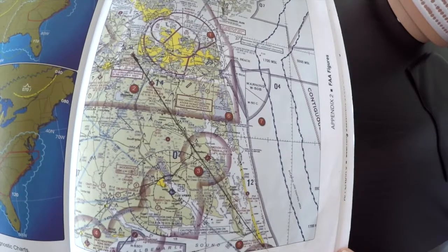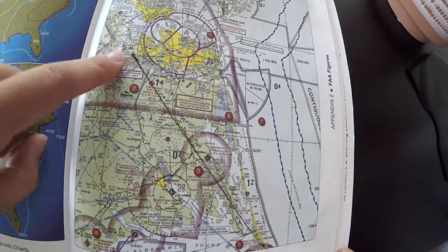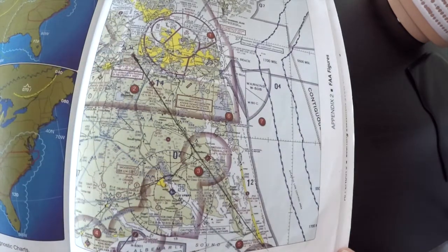Alright, so first thing we're going to do is draw a line between Hampton Roads, which is up here, and First Flight, which we've already done.